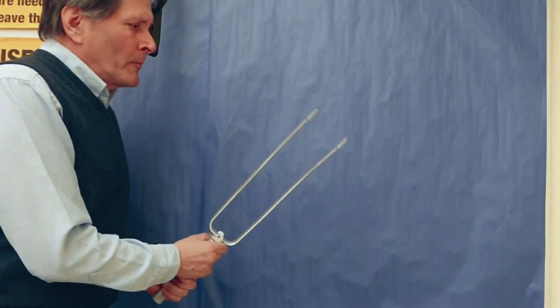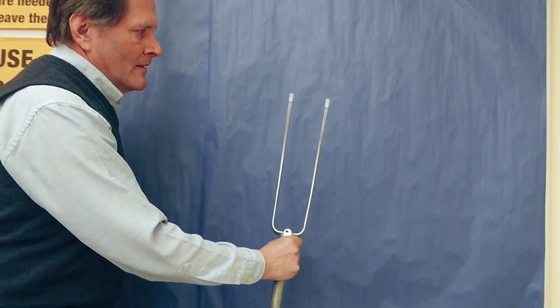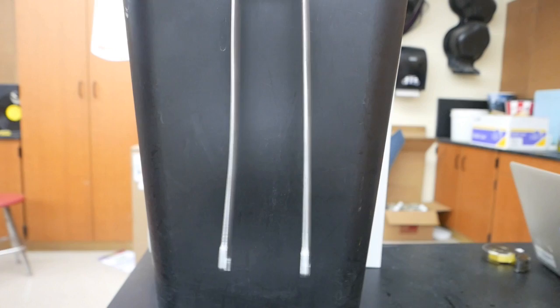Let's try the same thing behind a dark background. When we put this large fork in front of a dark background, we can simply see the tines vibrating.